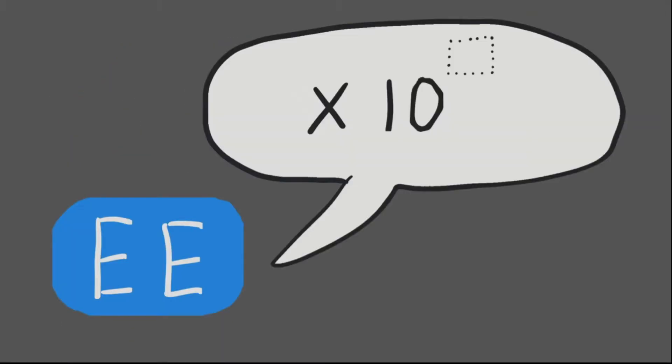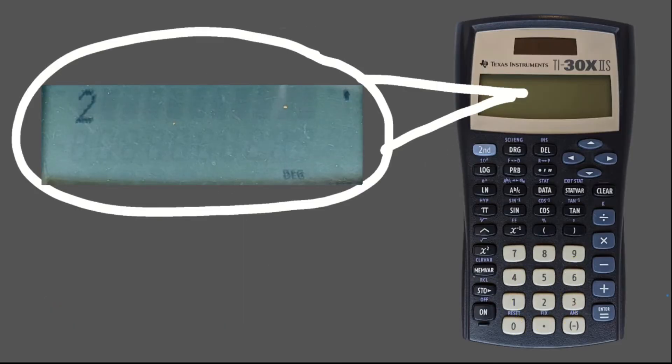Behold, EE. The EE function inserts an imaginary times 10 to the power of blank. So, with our previous example, we could write 20,000 by doing the following. First, press the 2 key. Then, use EE by pressing 2nd and then the button labeled x to the power of negative 1 with the small EE labeled above. Finally, press 4.